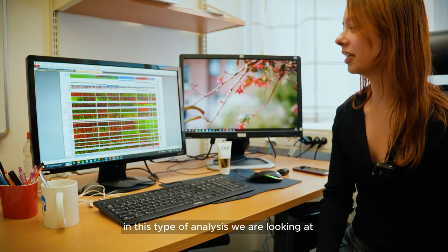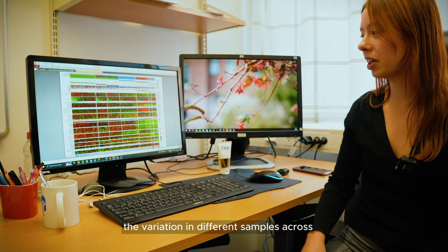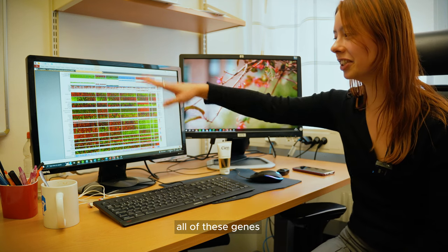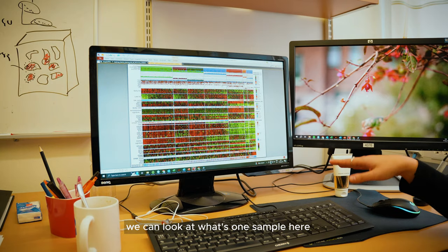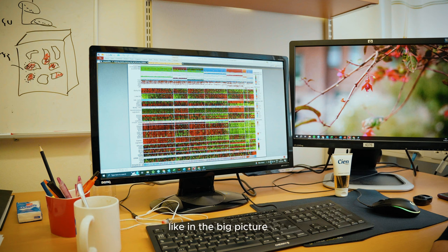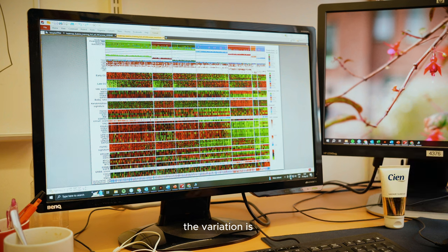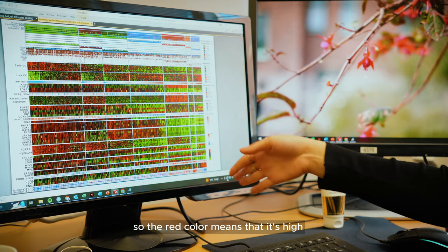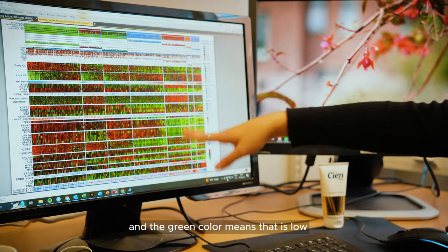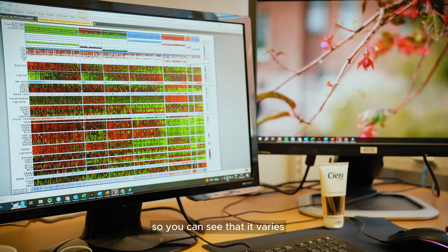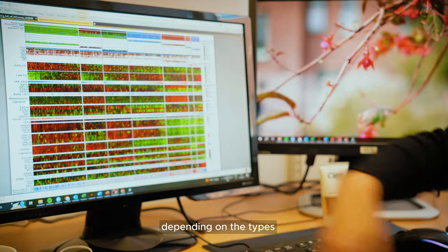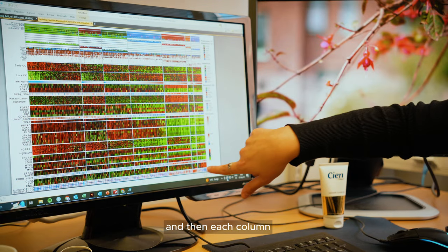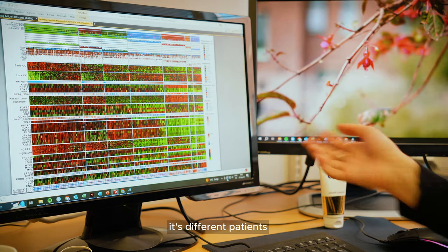In this type of analysis, we are looking at the variation in different samples across all of these genes. We can look at one sample in the big picture, put it all together, and then see what the variation is and how it matches with the different types of tumors. The red color means that it is high and the green color means that it is low. So you can see that it varies a lot depending on the types. Each row is a different gene and each column is a different patient.